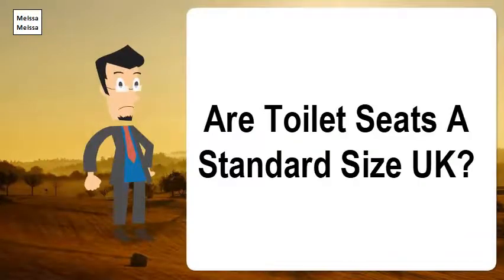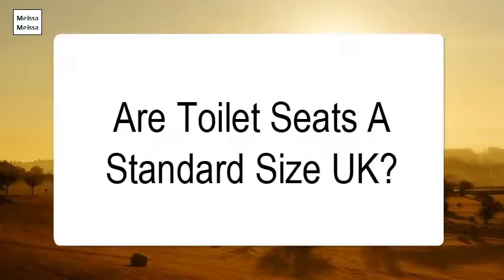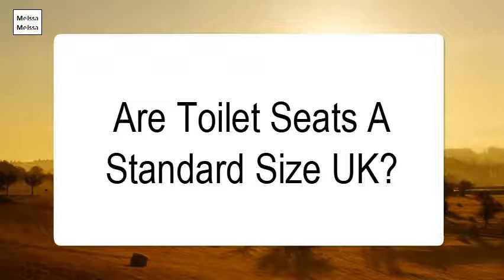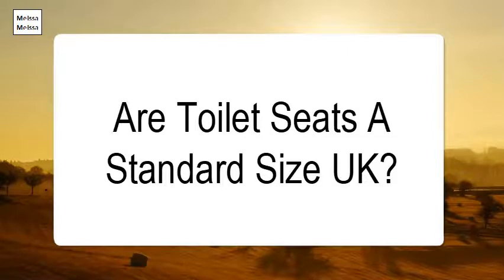Are toilet seats a standard size in the UK? If the length is about 16 to 17 inches, a standard round toilet seat will fit your toilet. If the length is 18 to 19 inches, an elongated or oblong toilet seat will fit. These have a width of about 14.5 inches, and in the United States the distance between the hinge post holes is about 5.5 inches.